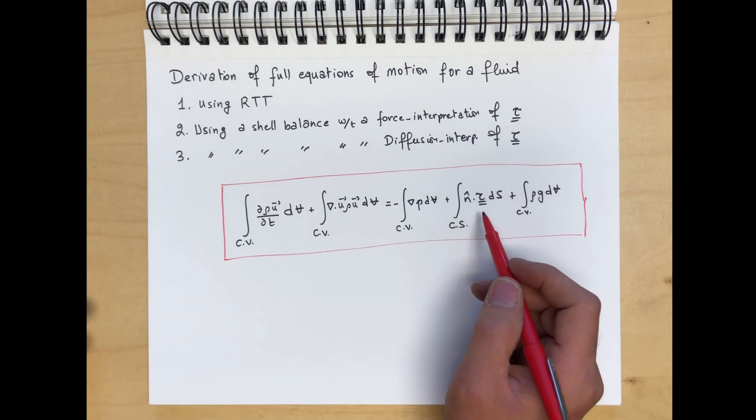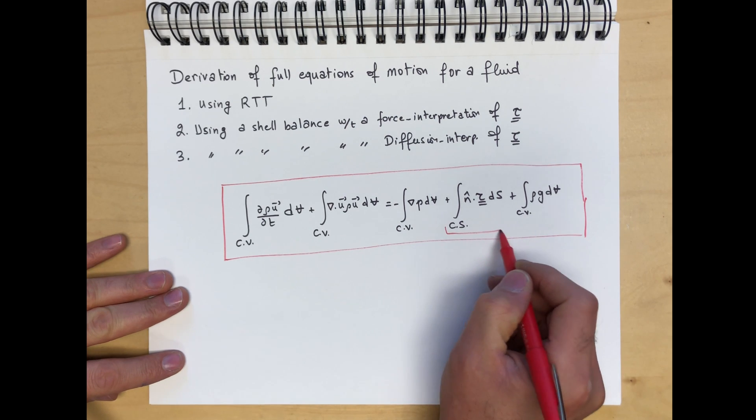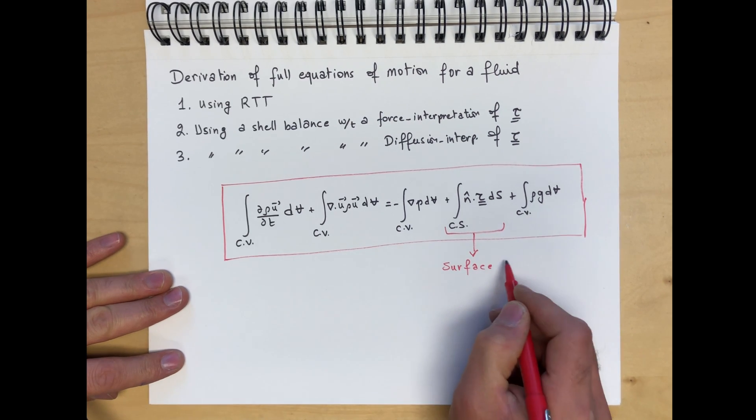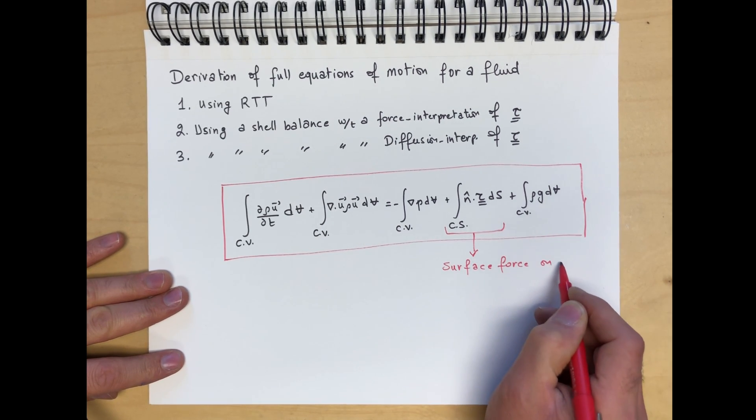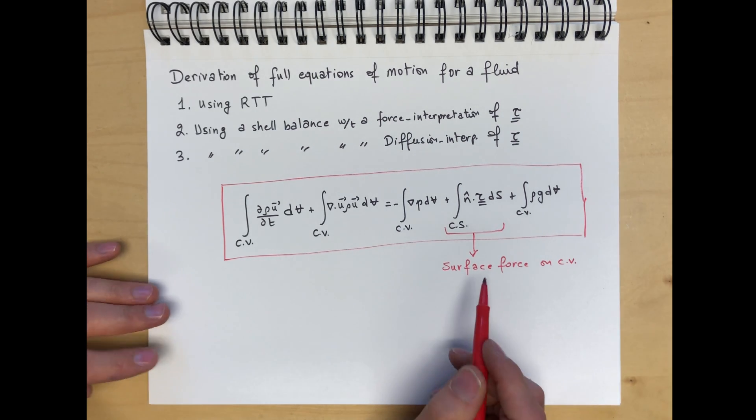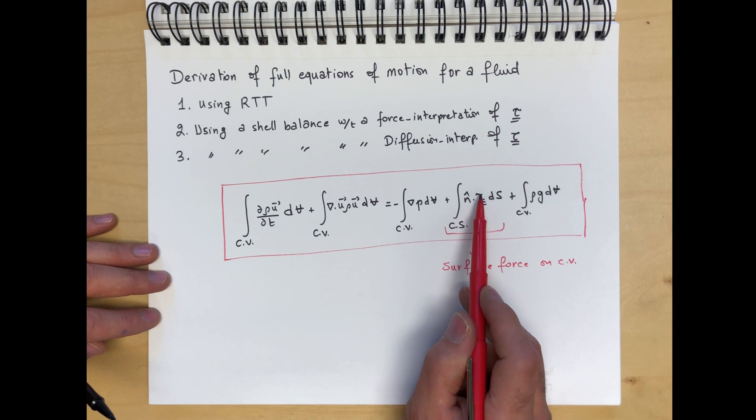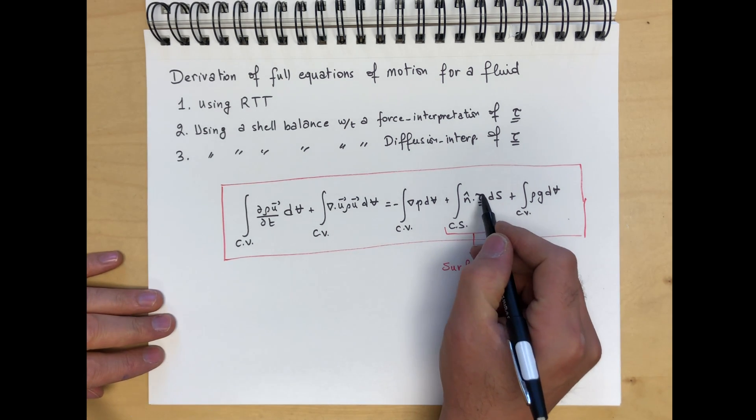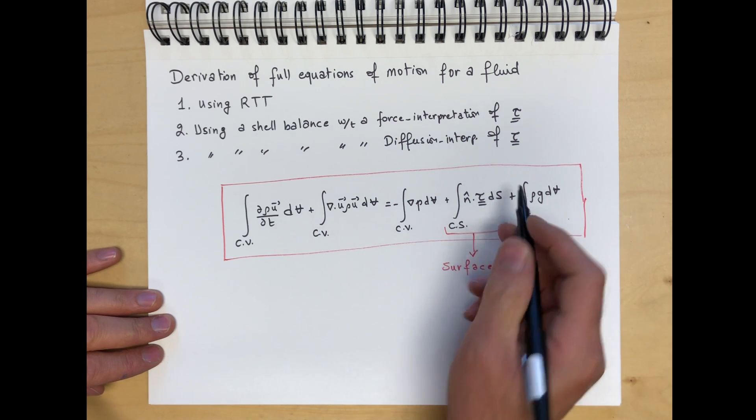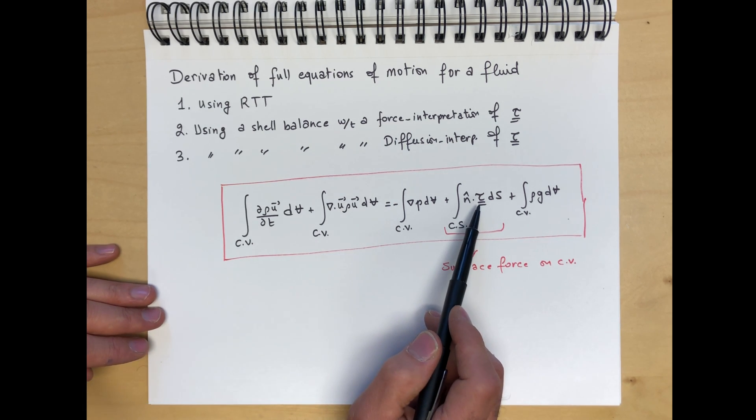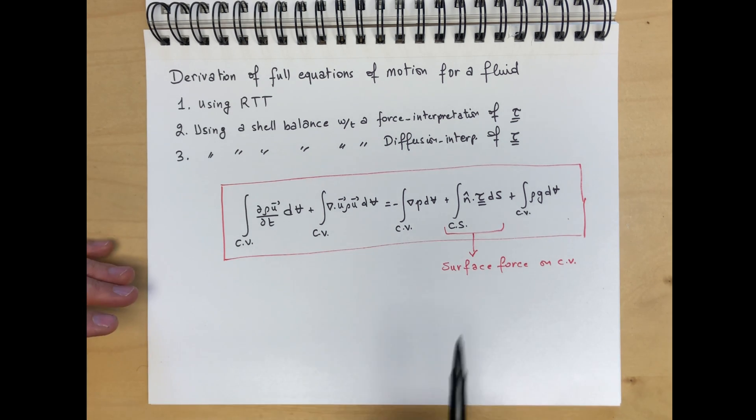The other change I made was for this integral of the surface forces. This is summing up all the surface forces on the control volume. It's integral over the control surface. And I switched the dot product. In the past you may have seen it as tau dot n. I'll explain a little bit later why this is a better way of writing it, because it clarifies the direction of the intended force.